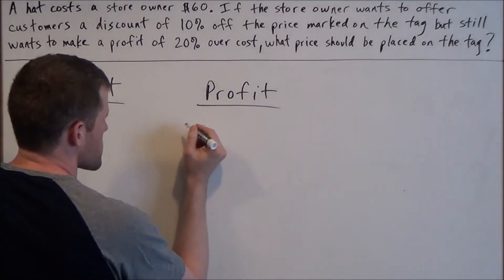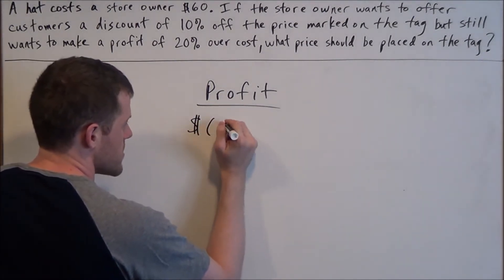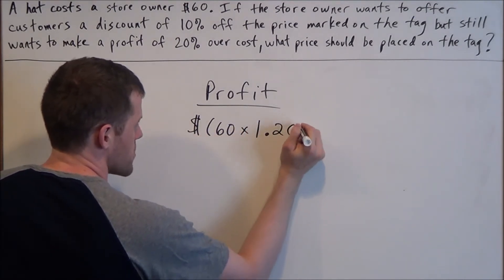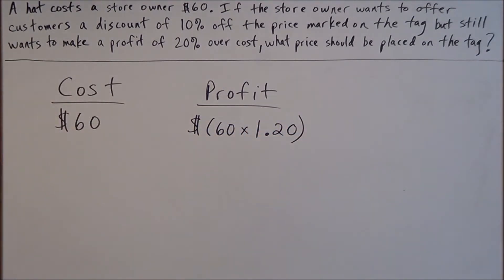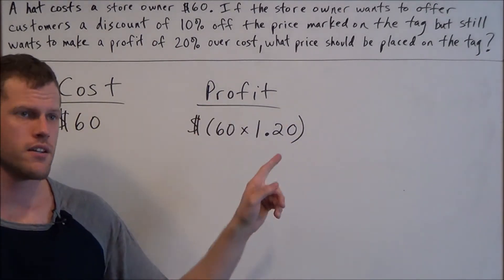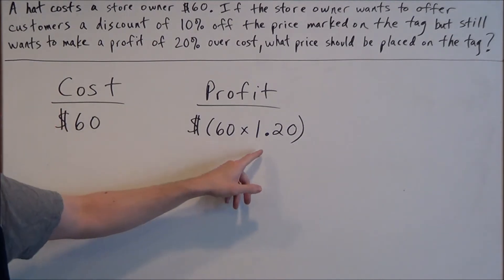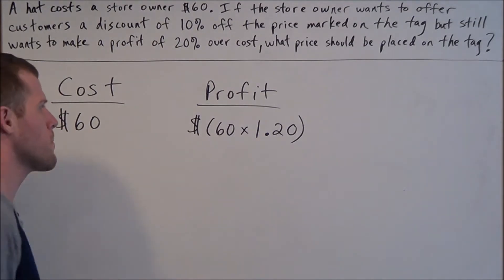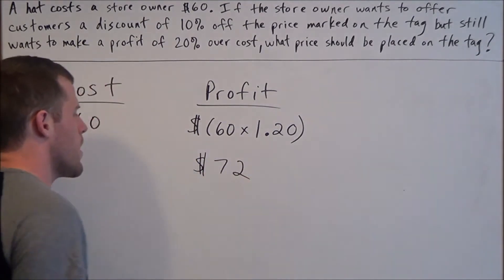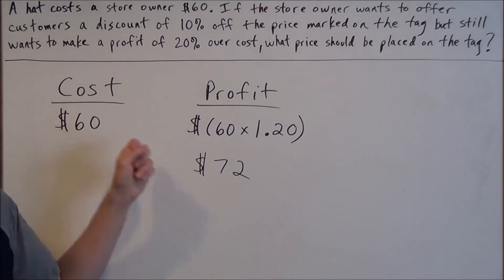To find a 20% increase of $60, we take 60 and multiply it by 1.20. If we want a 20% increase, we take 20% — which as a decimal is 0.20 — and attach it to 1. So 60 times 1.20 equals 72. To verify: 20% of 60 is 12, and 60 plus 12 is 72.